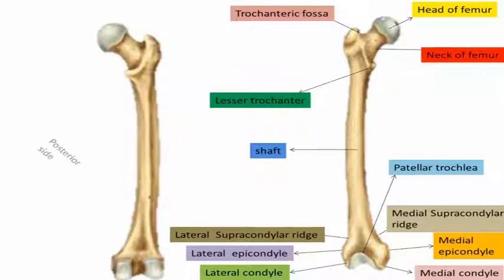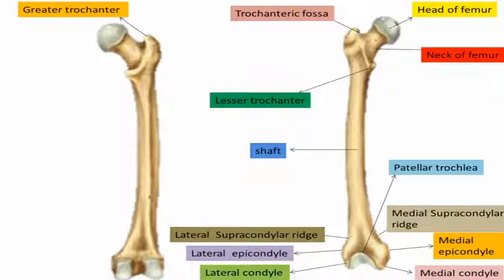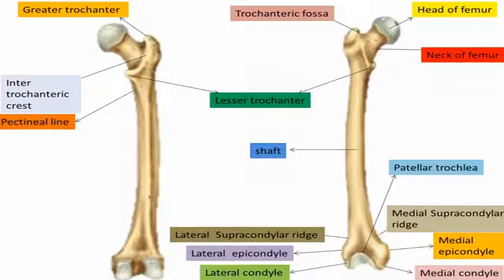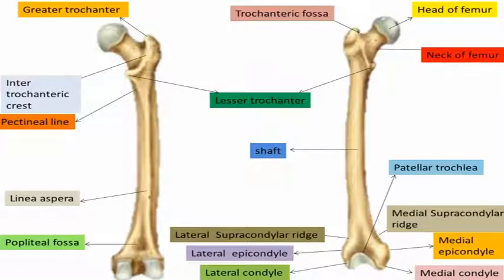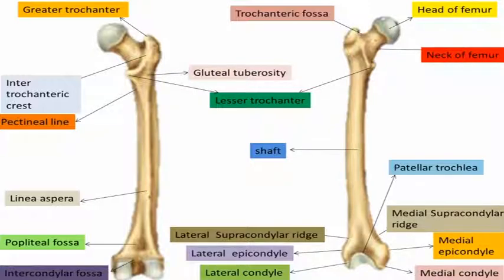Now we will learn about the landmarks on the posterior side of the femur. This is the greater trochanter, which is not shown in the anterior view. This is the lesser trochanter and the intertrochanteric crest. The line here is called the pectineal line. This is the linea aspera, which is divided superiorly — formed by the pectineal line — and inferiorly forms the popliteal fossa. These are the intercondylar fossa and the gluteal tuberosity.